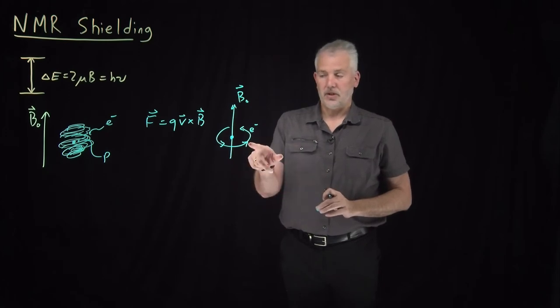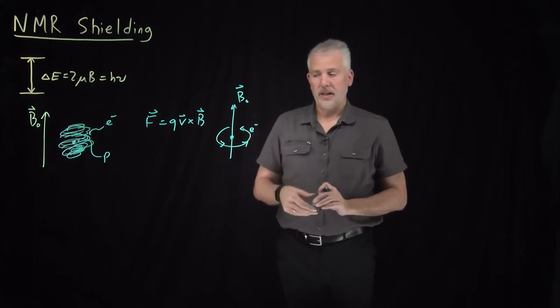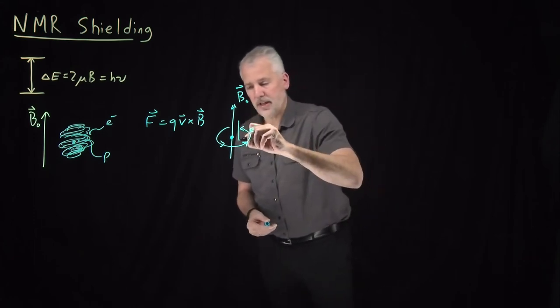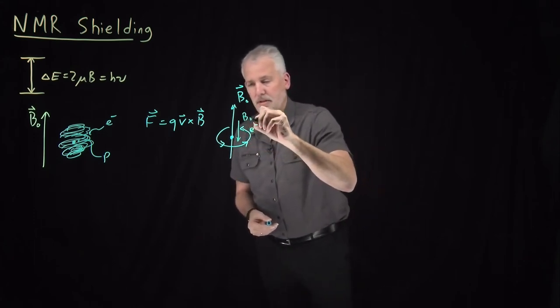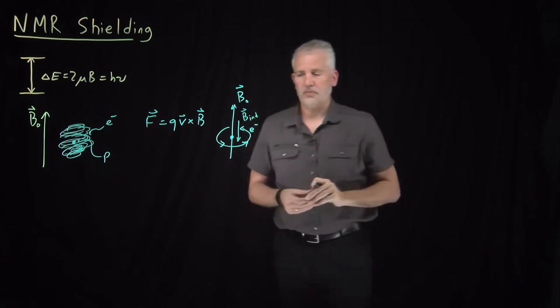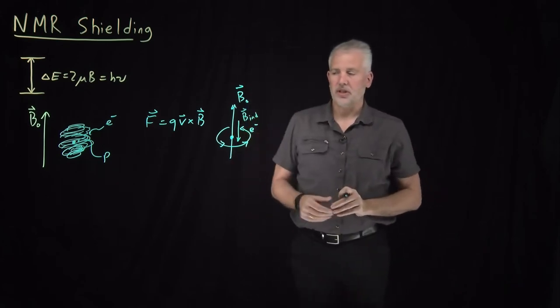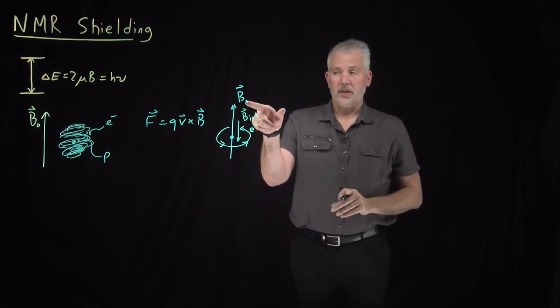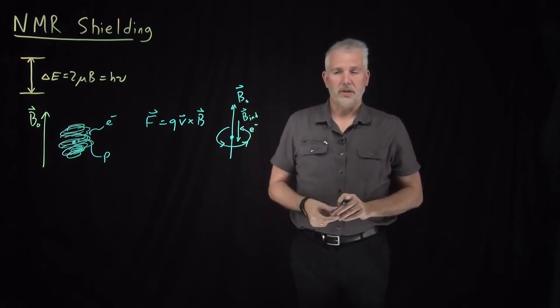The other thing to remember from second semester physics class is that in turn, a moving electrical charge generates its own magnetic field. In this case, the induced magnetic field, induced by the motion of that electrical charge, is in the opposite direction to the magnetic field that was there in the first place.